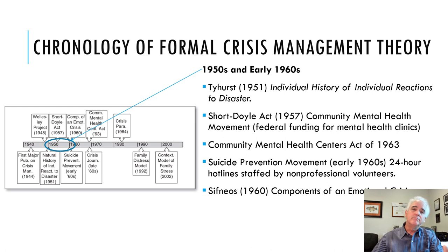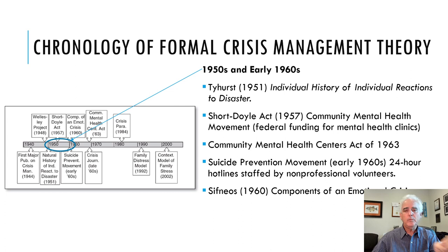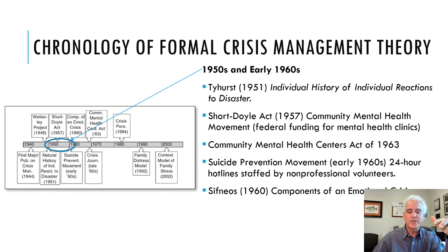The Community Mental Health Centers Act of 1963 was a continuation of the suicide prevention movement, which began in the early 1960s, envisioning 24-hour hotlines staffed by non-professional volunteers. And as you know, we still have that suicide prevention crisis line that you can call today. Then in 1960, Sipneos and its components of an emotional crisis arose, which helped us understand how people go through individual crises.